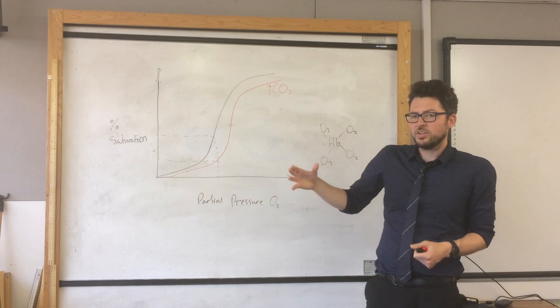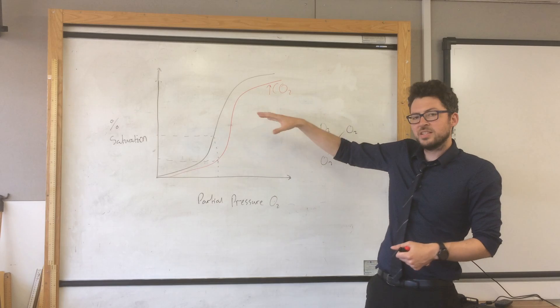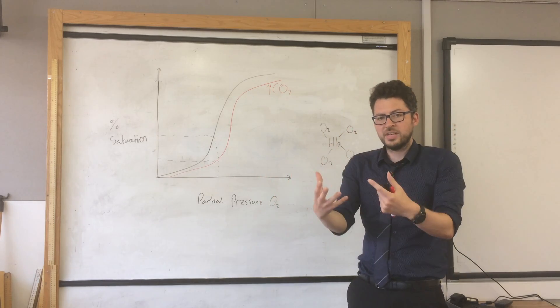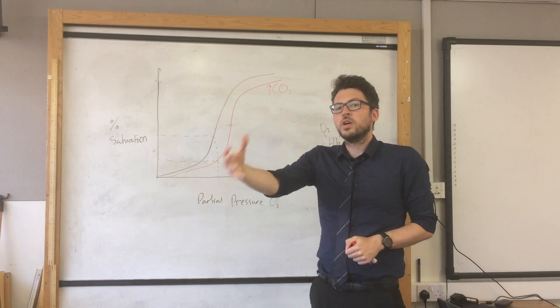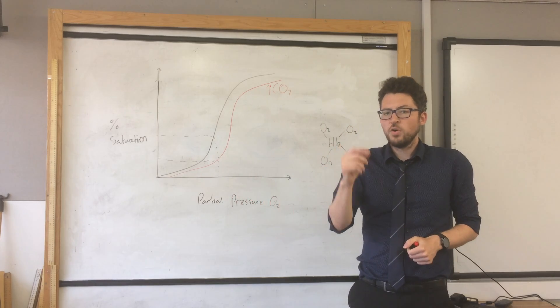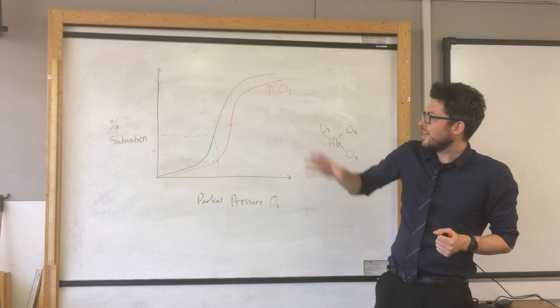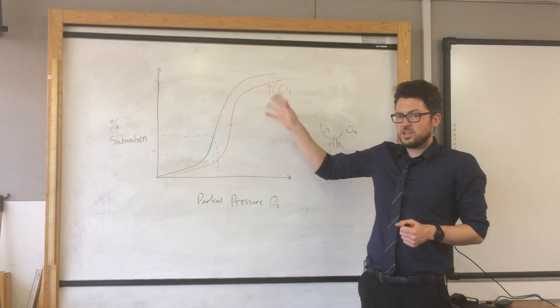So hemoglobin that's carrying oxygen into areas where there's a high amount of CO2 are going to give up their oxygen to the surroundings and provide that oxygen to those respiring cells for respiration. So that is what happens and that's the Bohr shift related to carbon dioxide.